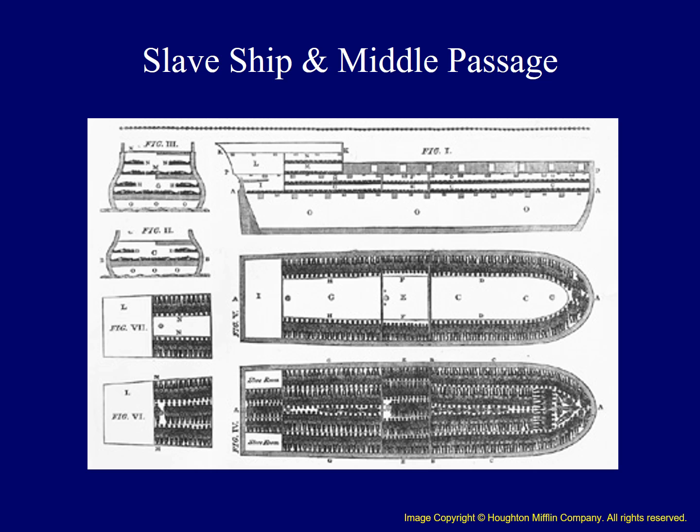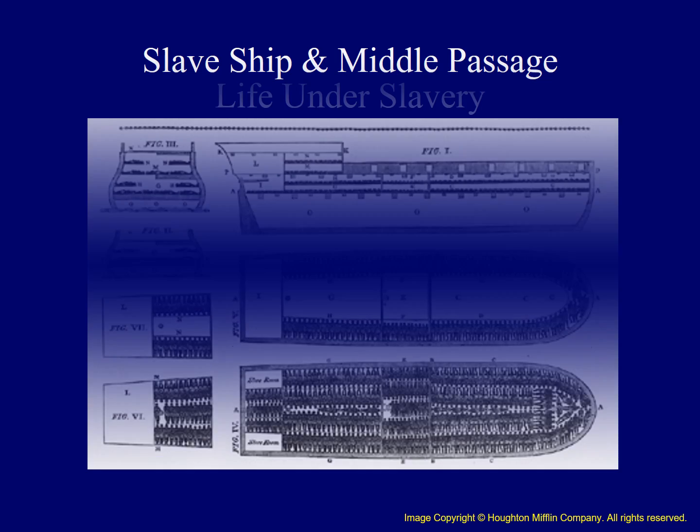Here we see the interior design of a slave ship. It graphically depicts the crowded, unsanitary conditions under which enslaved Africans were packed like cargo and transported across the Atlantic. Different shipping companies competed to develop designs whereby additional slaves could be placed within their hold, thereby increasing profitability. The death rate on these voyages could be staggering, and it's estimated that on average between 10 to 20 percent died before their journey was over. Once they arrived in North America, they faced a lifetime of servitude.